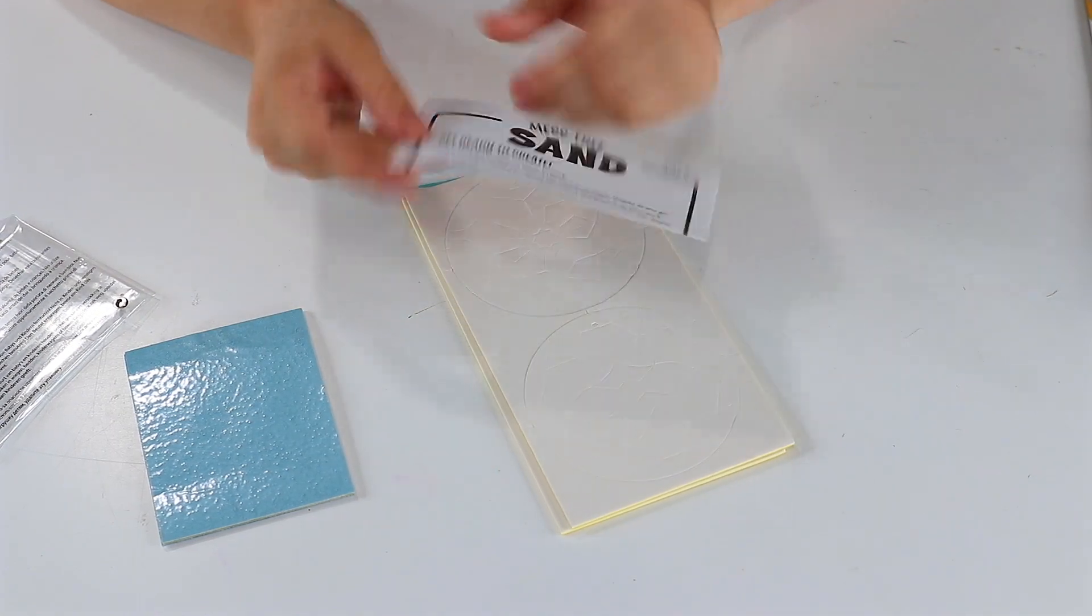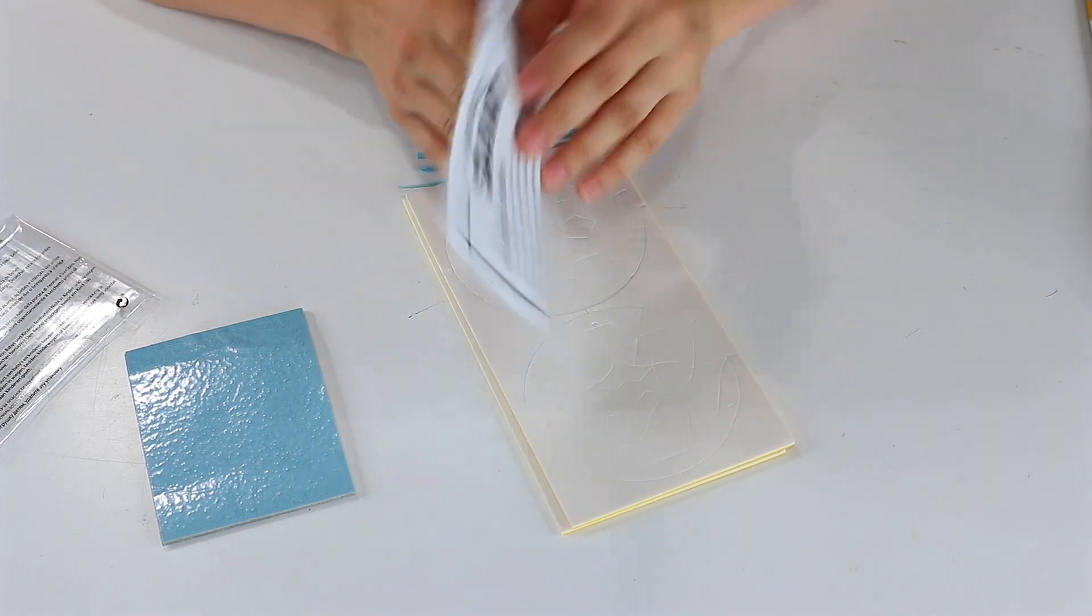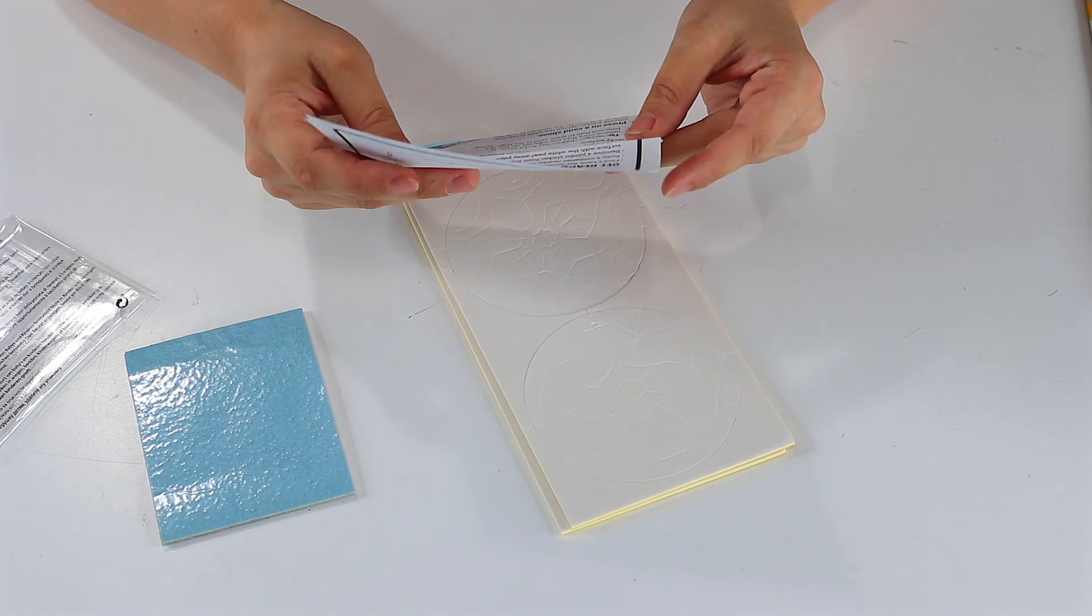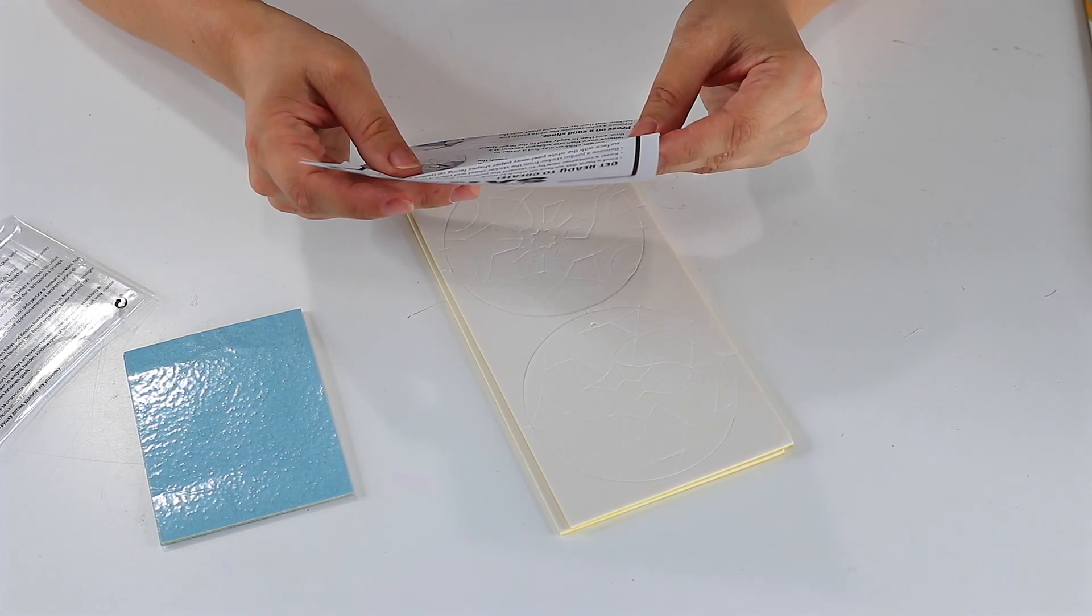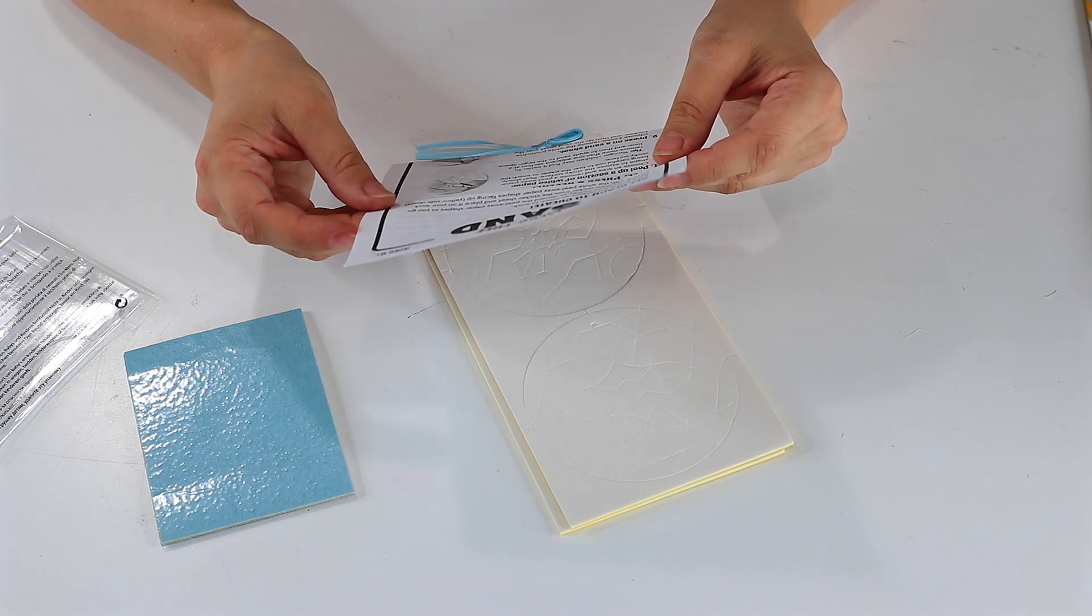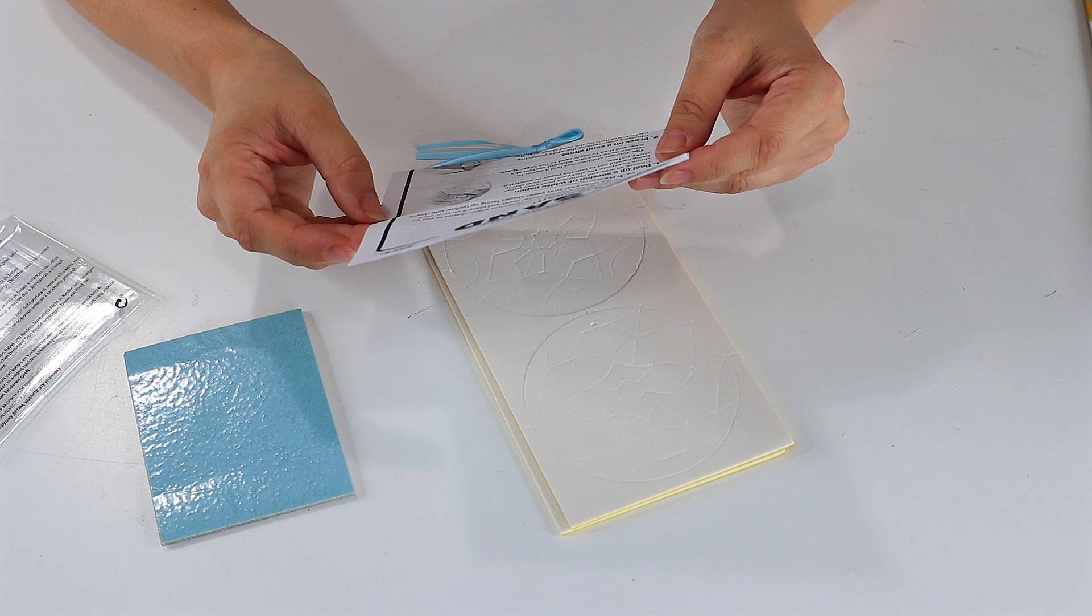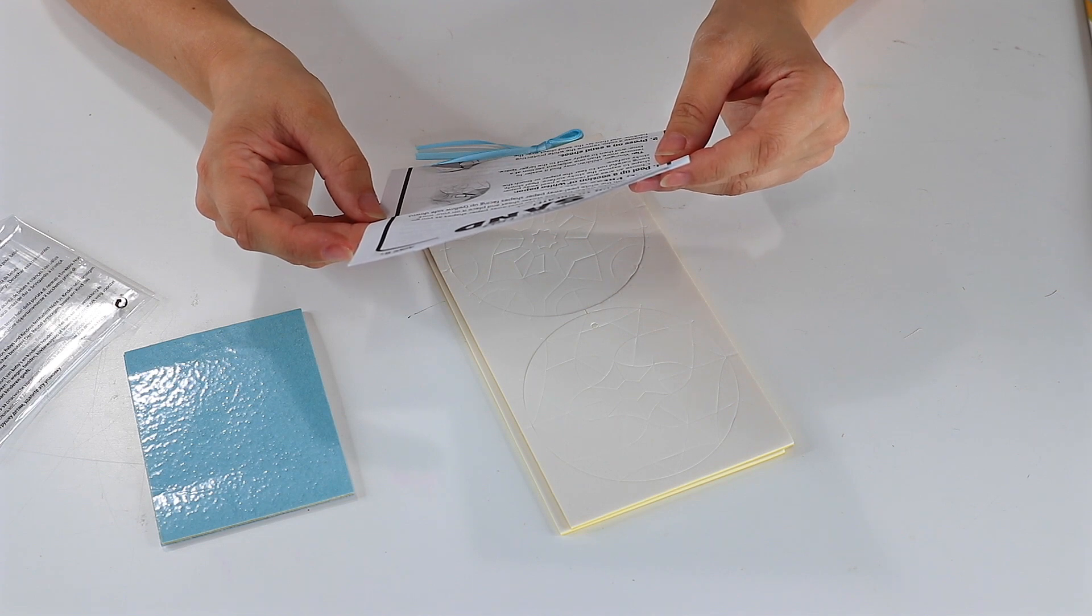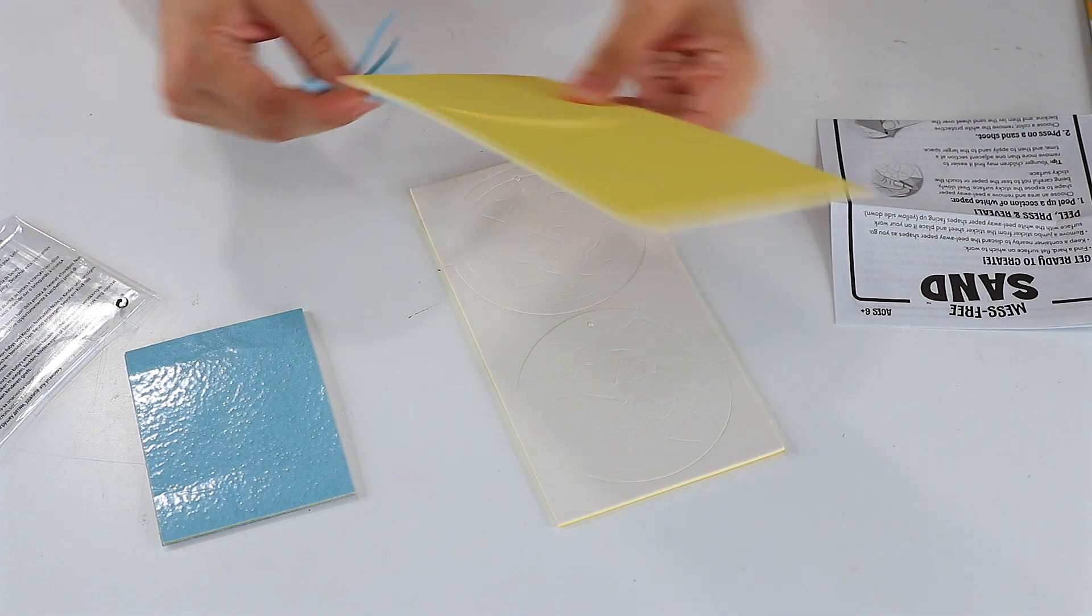So getting started. Find a hard, flat surface to work. Check. Keep a container nearby to discard the peel-away paper shapes as you go. Remove a jumbo sticker from the sticker sheet and place it on your work surface with the white peel-away paper shape facing up. So yellow side down.